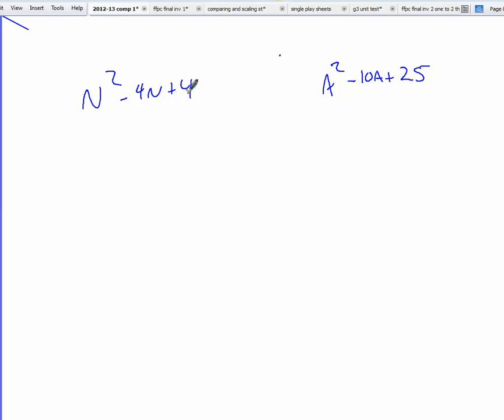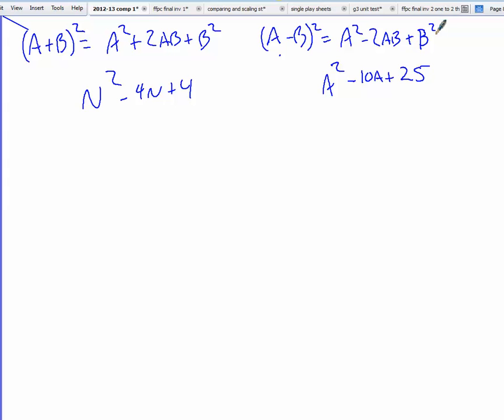And you will remember from class that the quantity a plus b squared is going to equal a squared plus 2ab plus b squared. Which also means that if you had a minus b squared, that's going to be equal to a squared minus 2ab plus b squared.